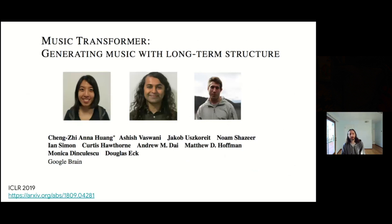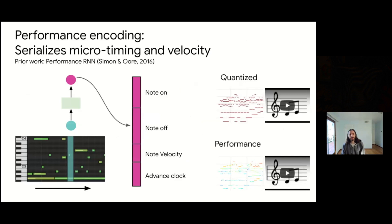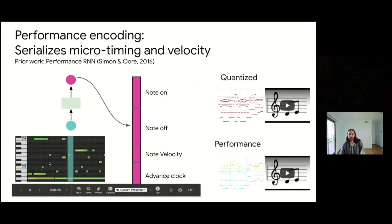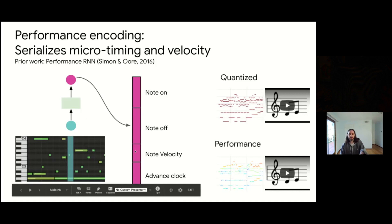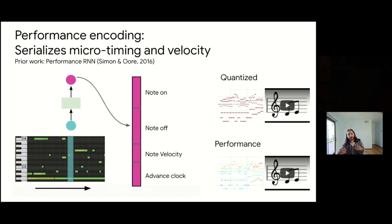We applied this to modeling symbolic music, calling it Music Transformer. One challenge is that a piano roll is not language — it's an image with notes. So we created a vocabulary of individual events: turning on a note, turning off a note, changing the velocity with which a note is hit, and advancing the clock forward. The amount you advance the clock can be very fine-scaled, allowing music that goes from a strict quantized grid to very flexible micro-timing in your performance. Here's an example of a piece that's quantized — it sounds a bit robotic. Now here it is with micro-timing and velocity variations — you notice the speeding up, slowing down, and small variations that give it humanity.